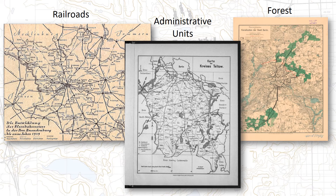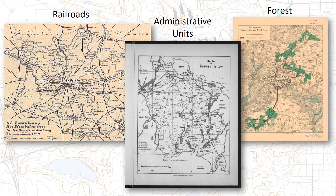Another quick example of a representative map is one that I made for a history professor a number of years ago. He came to me with a series of maps for railroads, administrative units, and forests, and he wanted elements of each of these maps to be extracted and combined into one clean map that he could put into his publication. To create this map, I took the three base maps the professor had given me, geo-referenced them, and extracted the relevant elements out of each map, combining them into one unified map for his publication.